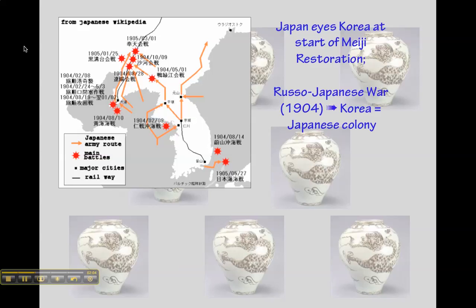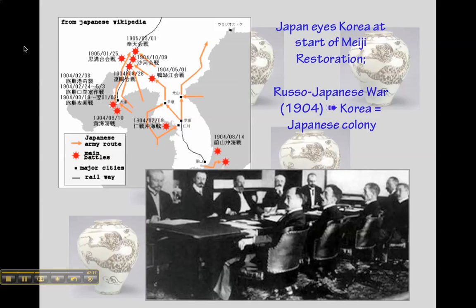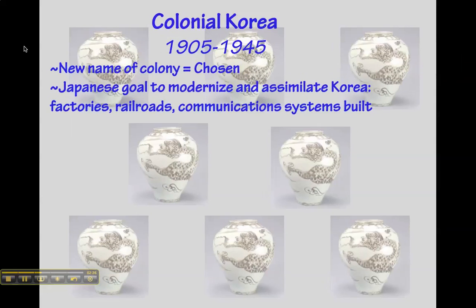This image shows the battle sites of the Russo-Japanese War, the war that Japan fought with Russia. The resulting Treaty of Portsmouth had delegates from Russia and Japan meet in New Hampshire to iron out the peace treaty, which resulted in Korea becoming a Japanese colony.